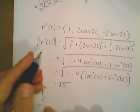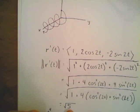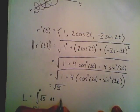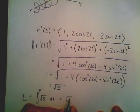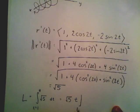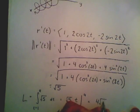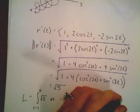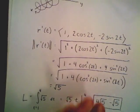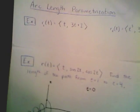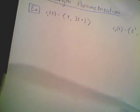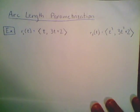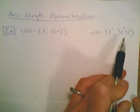So the arc length formula becomes the integral from t equals 1 to t equals 4 of square root of 5 dt. Integrating a constant gives square root of 5 times t, evaluated from t equals 1 to 4. The final answer is 4 times square root of 5 minus 1 times square root of 5, which equals 3 times square root of 5. You could plug this into a calculator if desired.